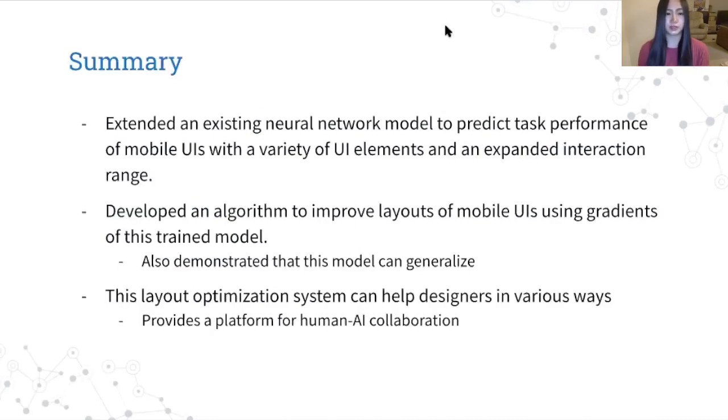So to summarize, we extended an existing neural network model to predict task performance of mobile UIs with a variety of UI element types and an expanded interaction range. We then developed an algorithm to improve layouts of mobile UIs using gradients of this trained model and also demonstrated that this model can generalize to new UIs. So this layout optimization system can help designers in various ways and also provides a platform for human AI collaboration. Thank you for listening.